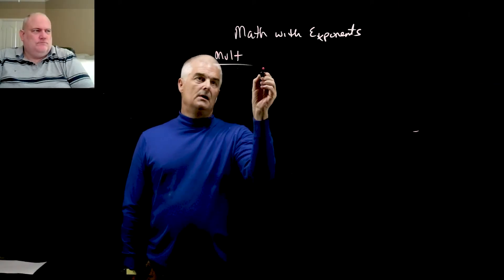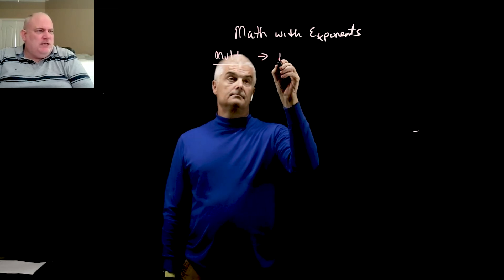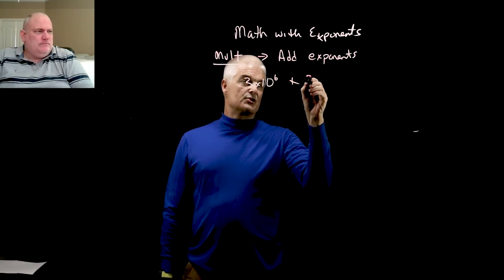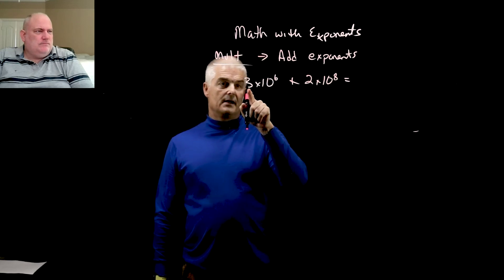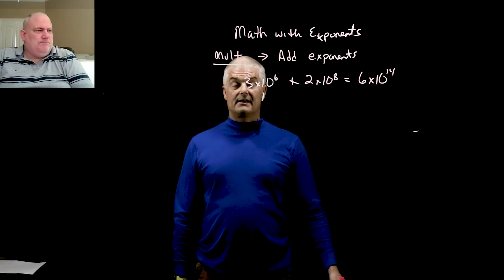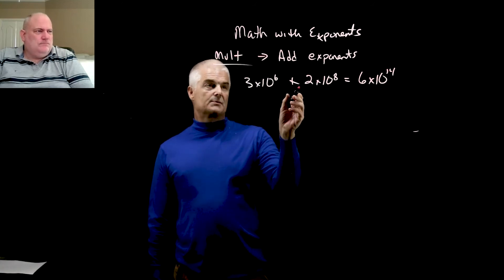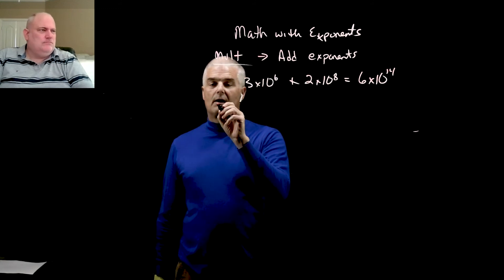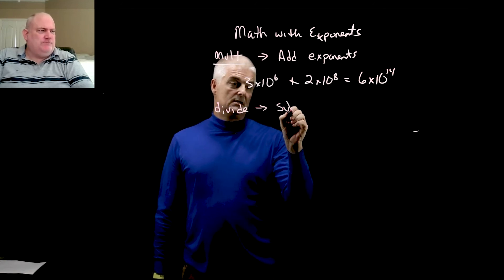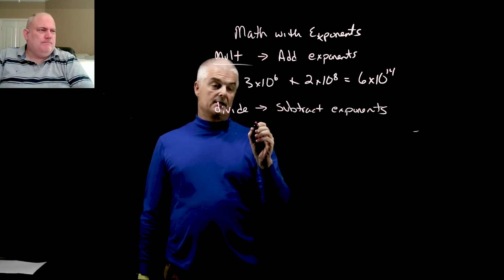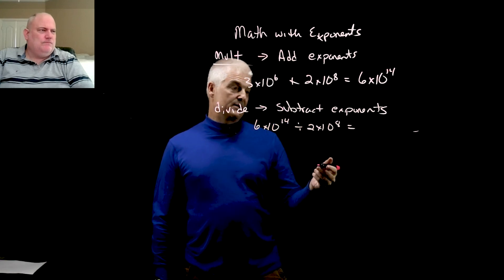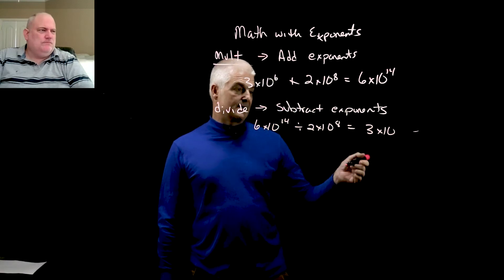Now let's talk about multiplication and division with exponents. For multiplication: you add the exponents. So 3 times 10 to the sixth, times 2 times 10 to the eighth — multiply 3 times 2 to get 6, then add exponents 6 plus 8 to get 14: result is 6 times 10 to the fourteenth. For division: you subtract exponents. For example, 6 times 10 to the fourteenth divided by 2 times 10 to the eighth — 6 divided by 2 is 3, 14 minus 8 is 6: result is 3 times 10 to the sixth.